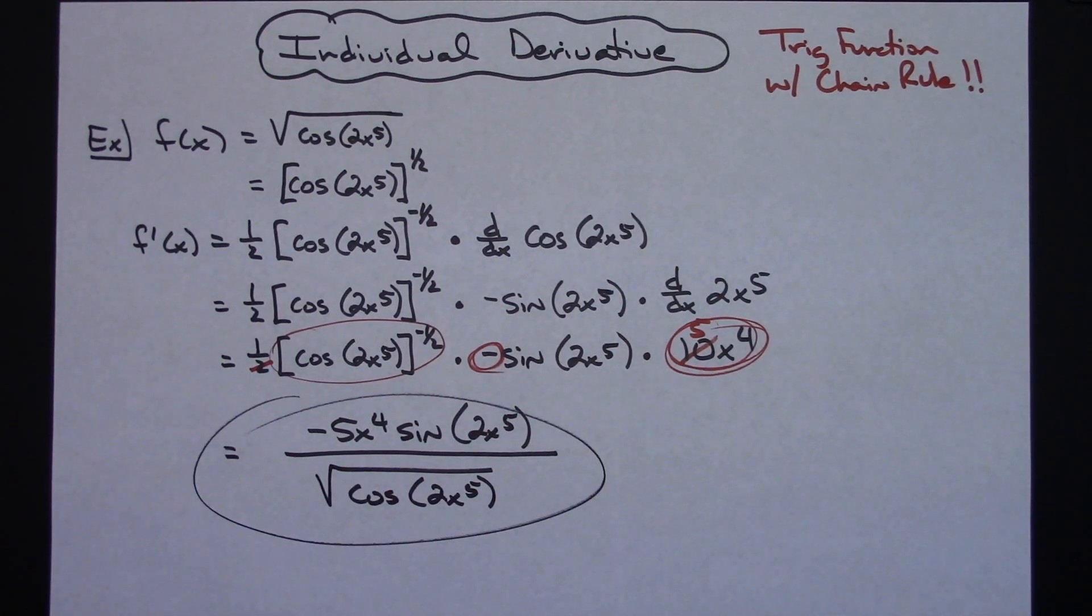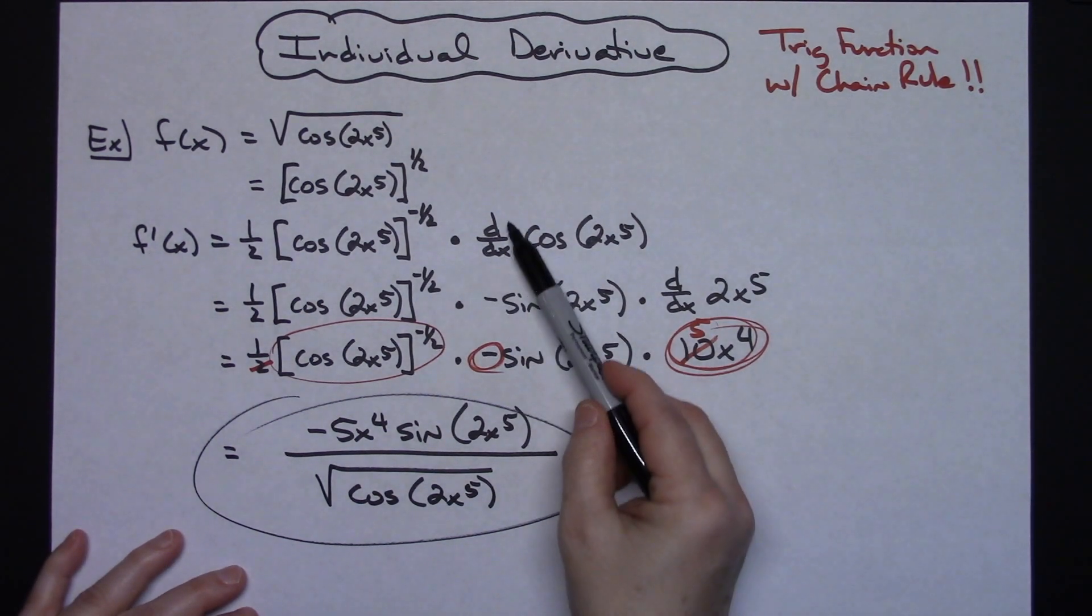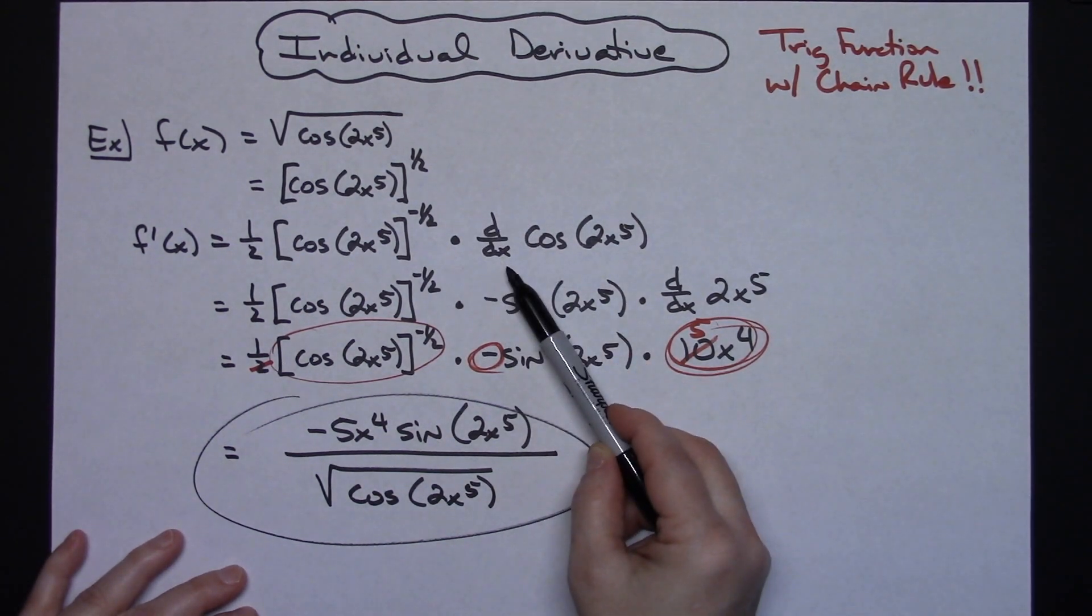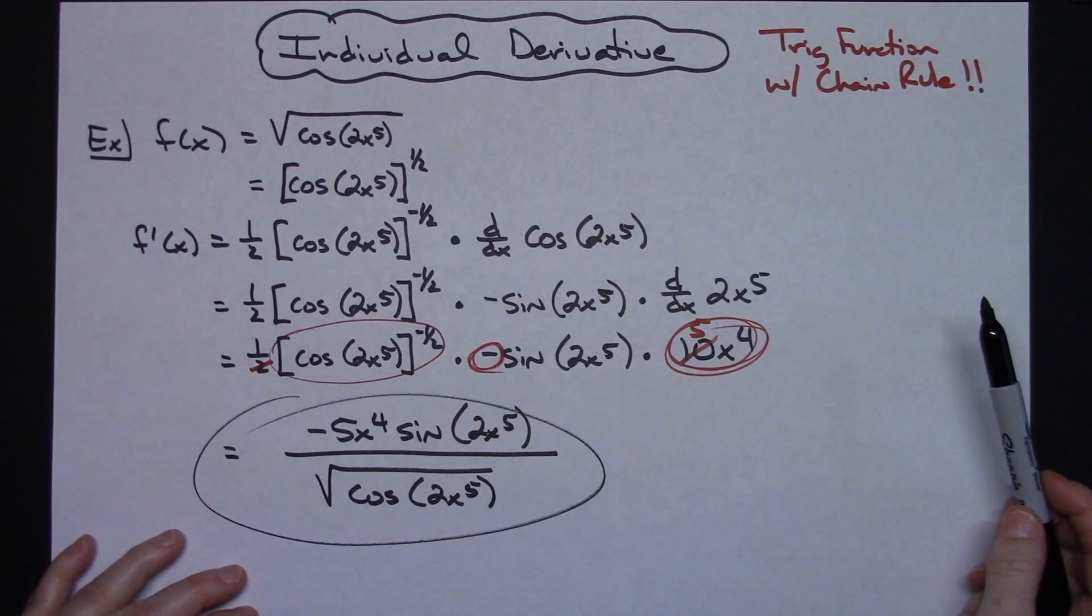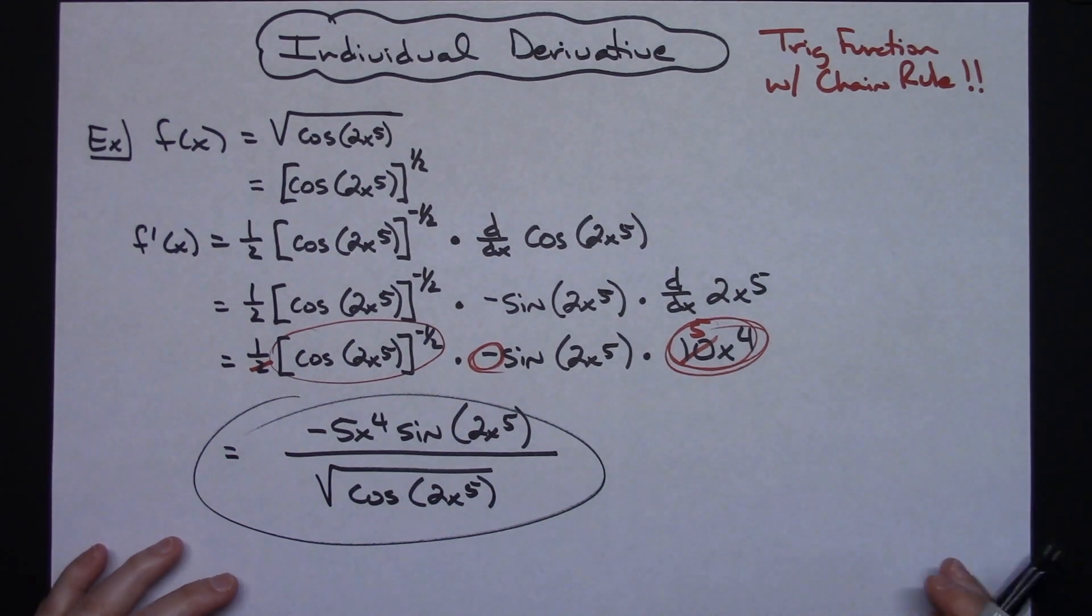So definitely a straightforward trig derivative with two chains in there because of those composite functions, a function being inside a function inside a function. So when you can clearly see that there's an inside and an outside portion of the function, that's going to be your sign that you're going to be implementing a chain rule. And I do highly recommend this DDX notation every time. Don't try to take that derivative in your head because you have a tendency to lose a chain in there every time we do that.